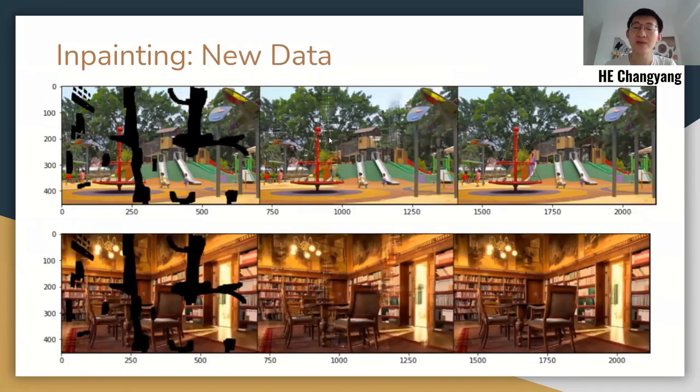We apply deep image prior for inpainting to two more outdoor and indoor scenes to verify the generalization ability. It can still generate convincing inpainting results. But there is still improvement space, especially for more complex outdoor scenes. You can see shadow here.